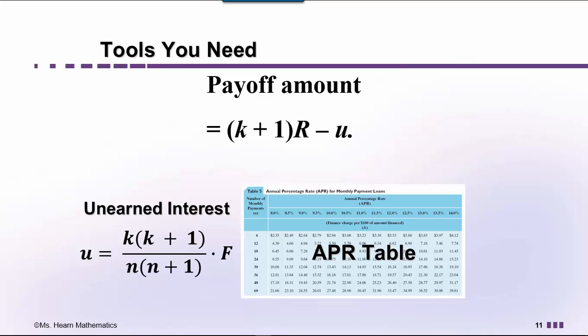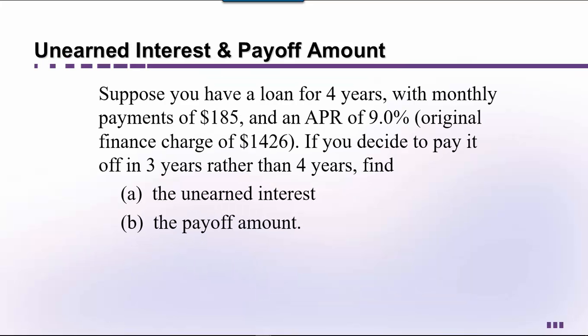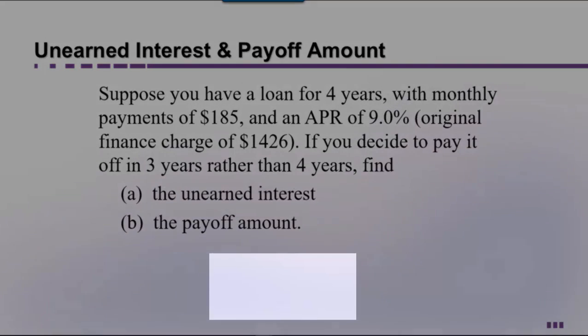Here's an example. Suppose you have a loan for four years with monthly payments of $185 and an APR of 9%. The original finance charge was $1,426. If you decide to pay it off in three years rather than four, let's find the unearned interest and the payoff amount.